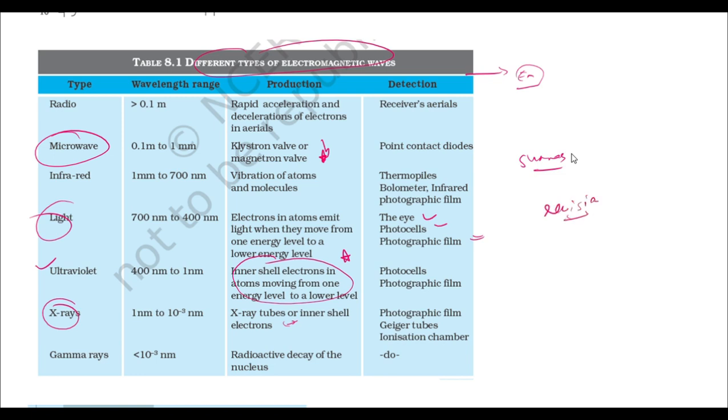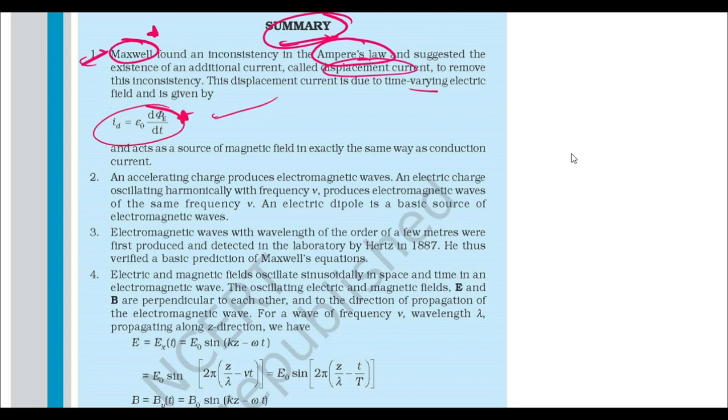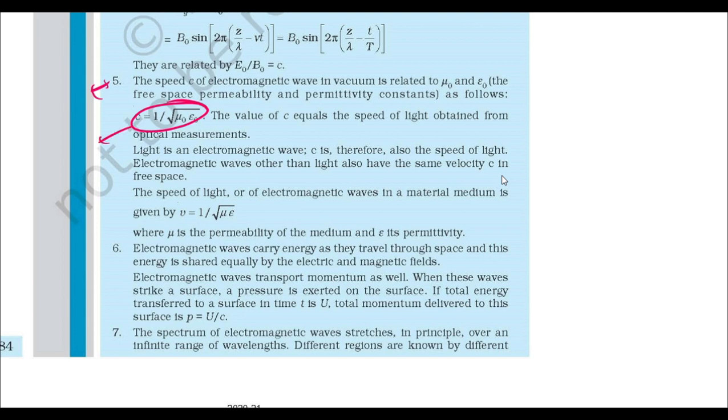At the same time, you're trying to understand the concept and linking each thing with others. At the end of this chapter, in the summary, they have clearly given important points. What was the inconsistency in Ampere's law? Who told? Maxwell found it. Displacement current is due to the time-varying electric field, and the equation is given here. What produces electromagnetic waves? This was a question last year - accelerating charges. The speed of electromagnetic waves in vacuum is this. What if it's in a medium? Just replace mu naught and epsilon naught with mu and epsilon.